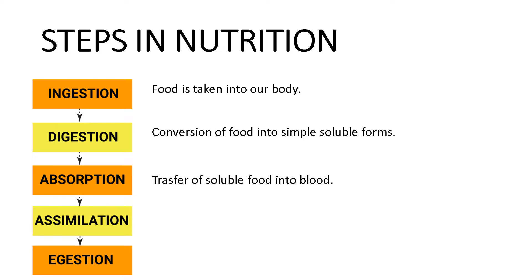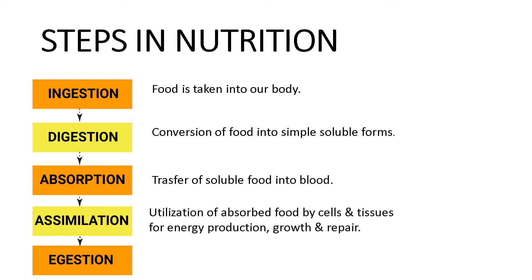Our cells and tissues utilize the food absorbed by the blood for producing energy, which we can use for growth and repairing of wear and tear. Repairing of wear and tear means if we get any hurt, it is healed, because our cells utilize the food absorbed by our blood in the healing or repairing process. Also, the absorbed food is used for growth, and this process is called assimilation. So assimilation is utilization of absorbed food by the cells and tissues for energy production, growth and repair.